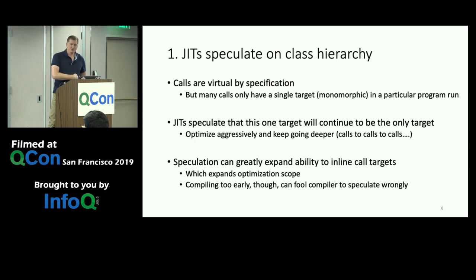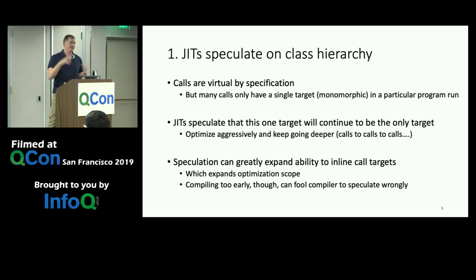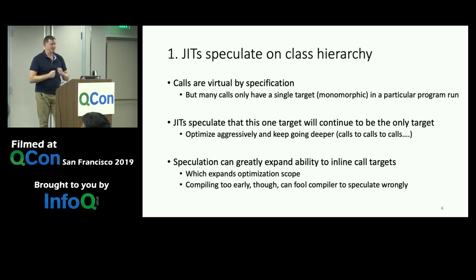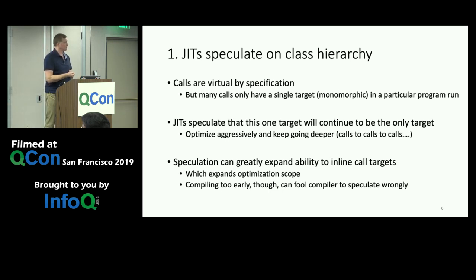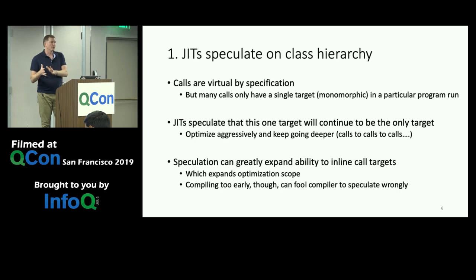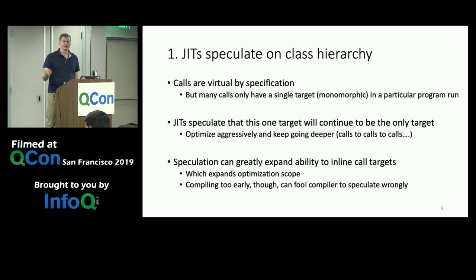Inlining is one of the great enablers in compilers — it allows you to see more operations in scope, combine the context at a call site with the code inside the call, and greatly expand the scope of optimization. However, because of Java's dynamic nature, if you compile too early, you can speculate on something that doesn't only have one target, generating code that's correct for a while but wrong in the real world, requiring the JIT to generate backup paths.